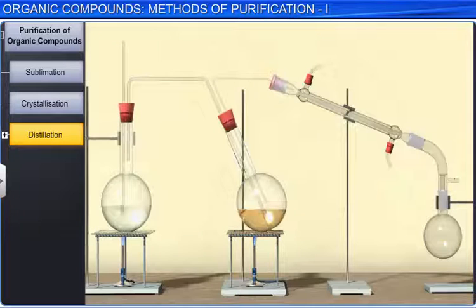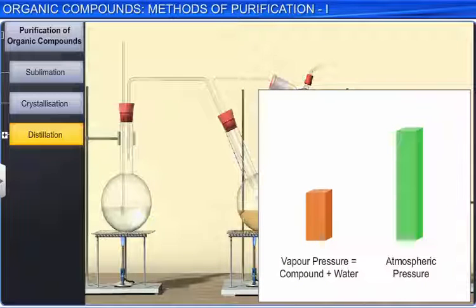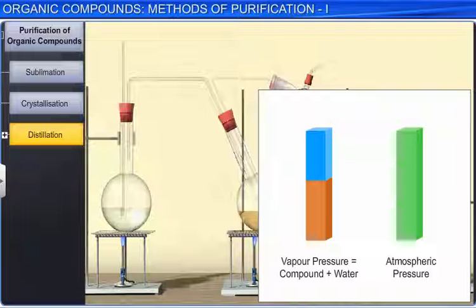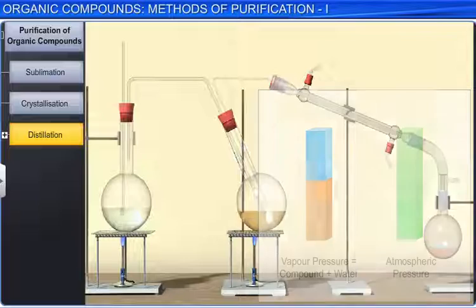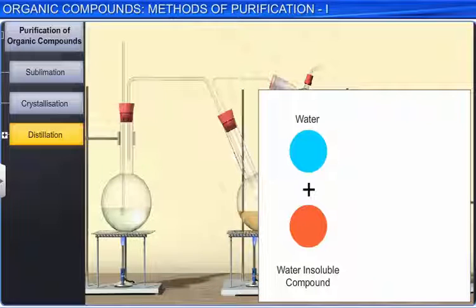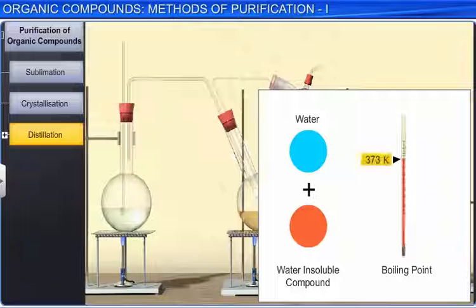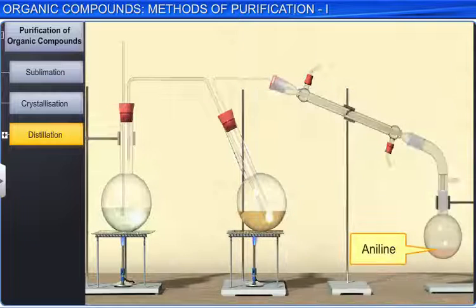In steam distillation, the liquid boils when the sum of the vapor pressures due to the organic liquid and due to water becomes equal to the atmospheric pressure. Since the vapor pressure of the organic liquid is lower than the atmospheric pressure, the organic liquid vaporizes at a lower temperature than its boiling point. Hence, if one of the substances in the mixture is water and the other is a water-insoluble but steam volatile substance, then the mixture will boil close to but below 373 Kelvin. Aniline is separated by this technique from an aniline-water mixture.